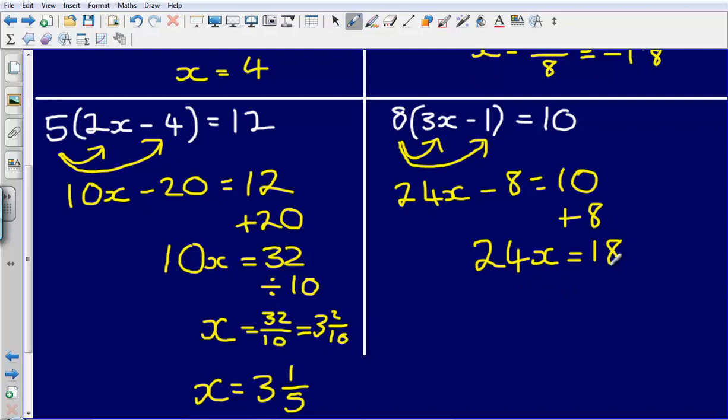Then if 24x is equal to 18, this means 24 multiplied by x. So to undo that multiply by 24 I'm going to divide by 24, and so what I end up with is x is equal to 18 over 24, and I can leave that as a fraction. Can I simplify the fraction? Yes I can, because 6 fits into both 18 and into 24. So my final answer here is going to be x is equal to 3 quarters.